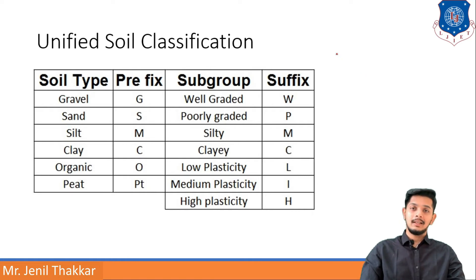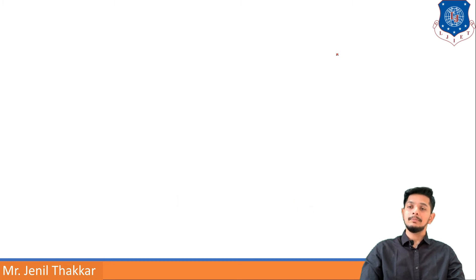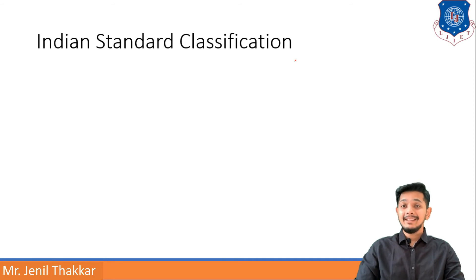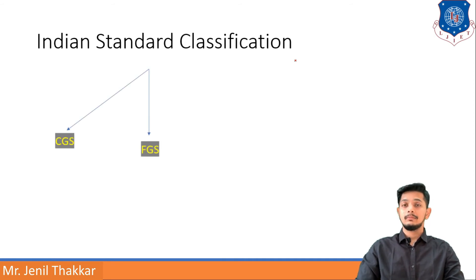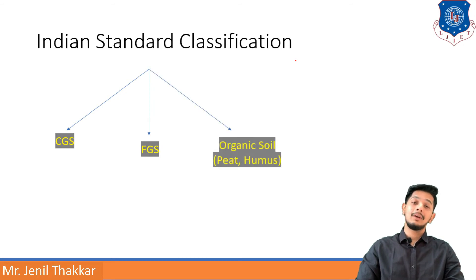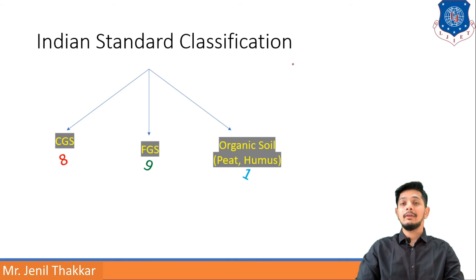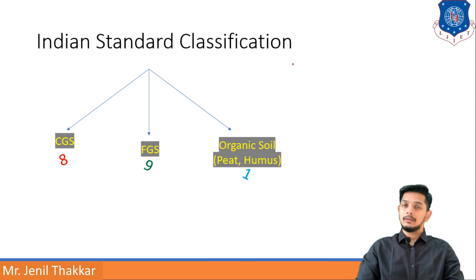Let us move to Indian Standard classification. IS classification is divided into three types: coarse grained soil (CGS), fine grained soil (FGS), and organic soil. CGS has 8 groups, FGS has 9 groups, and organic soil has a single group. Peat and humus are inserted in the organic soil category.